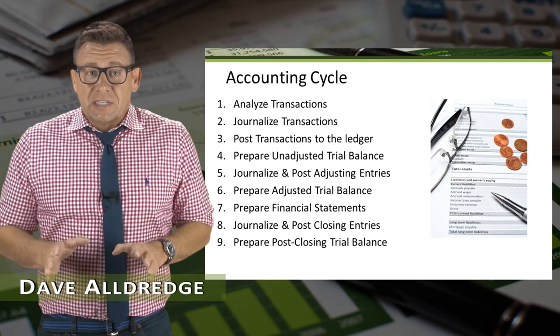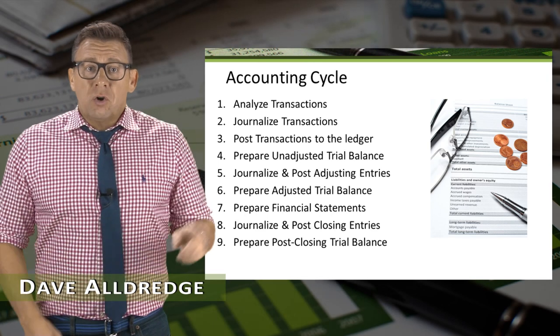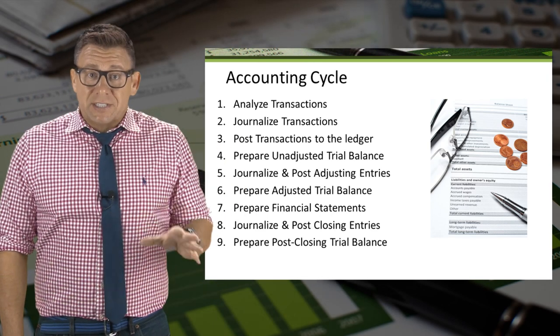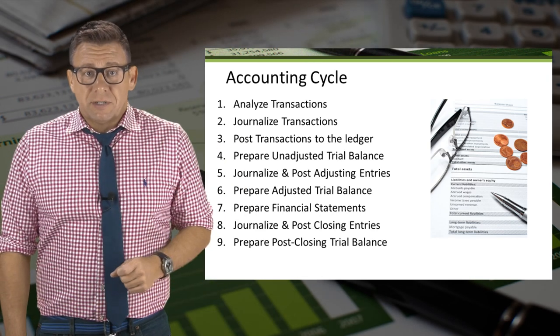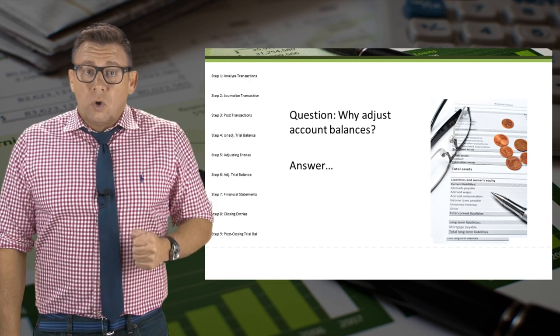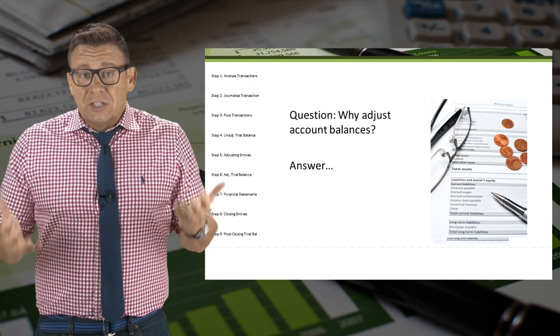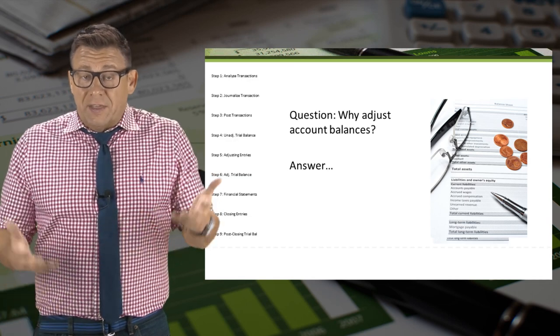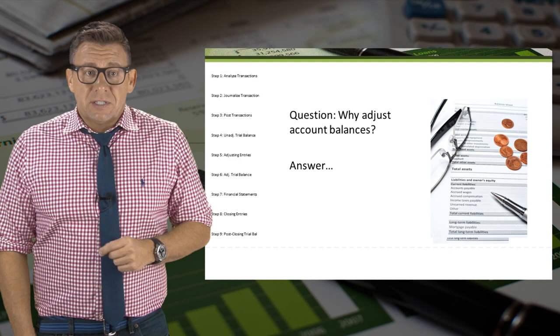Let's revisit the accounting cycle. Notice that step five relates to adjusting journal entries. So the question is: why adjust account balances? Why do they need adjustment?